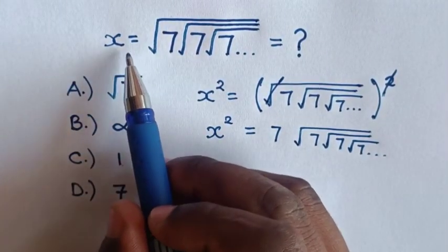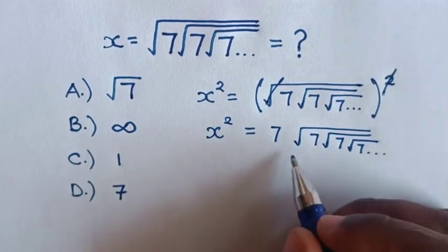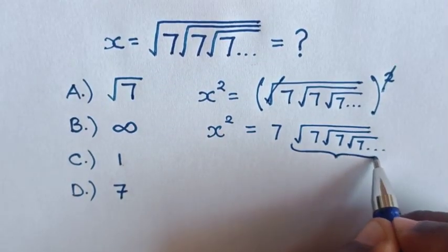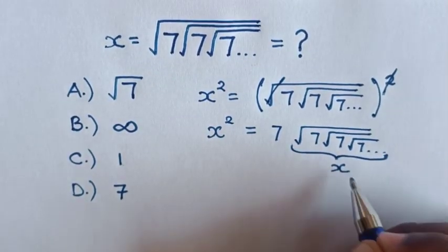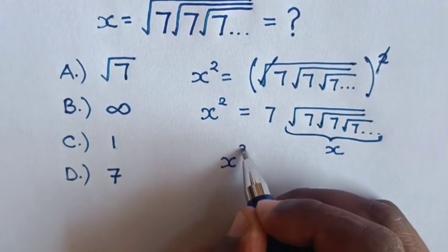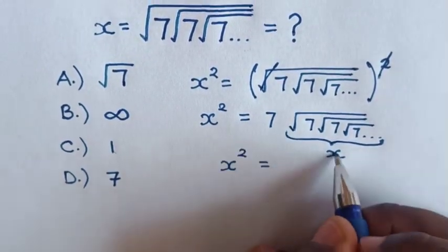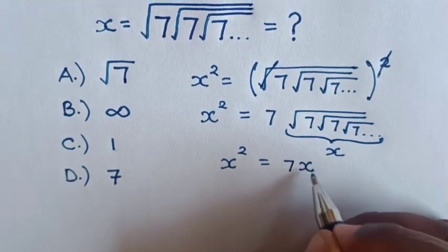But before, we let this expression equal x. So we substitute this as x. Then x squared equals this term, which is 7x.